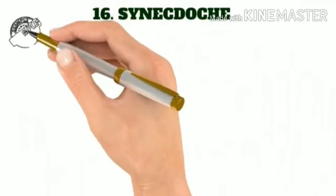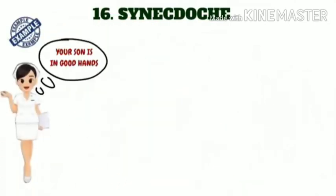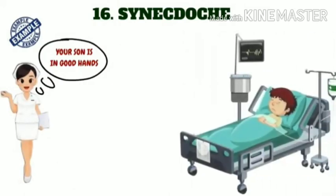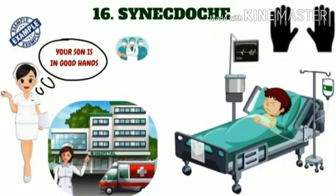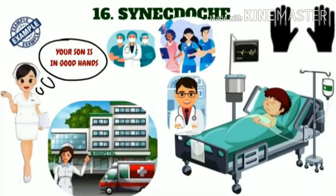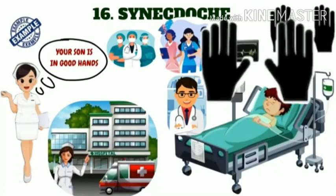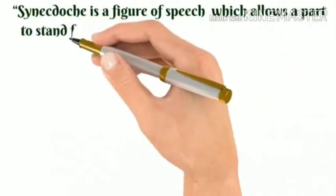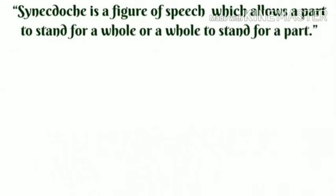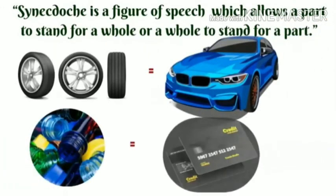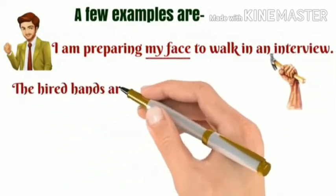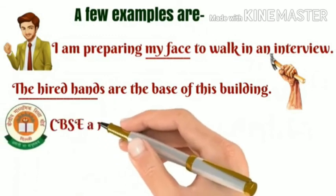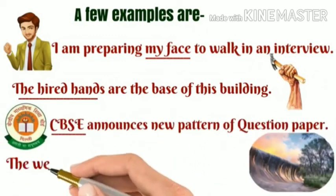Synecdoche. The nurse says 'your son is in good hands.' Here the son is literally not being taken care of by two hands only — rather he is being taken care of by an entire hospital system including nurses, assistants, doctors, and many others. This is an example of synecdoche, where a part signifies a whole. Synecdoche is a figure of speech which allows a part to stand for a whole, or a whole to stand for a part. It uses 'wheels' for the car, 'plastic' for credit cards, and so on. Examples: 'I am preparing my face to walk in an interview.' 'The hired hands are the base of this building.' 'CBSC announces new pattern of question paper.' 'The western waves were all aflame.'